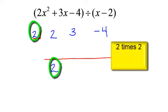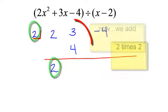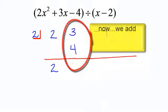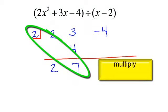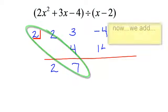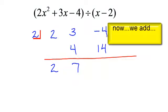2 times 2 is 4. Now we add. 3 and 4 is 7. Do it again. Multiply. 2 times 7 is 14. And then we add. Negative 4 and a positive 14 is 10. And we're done.